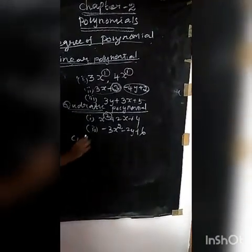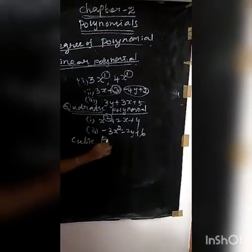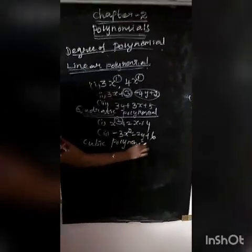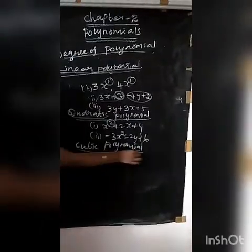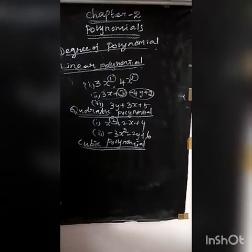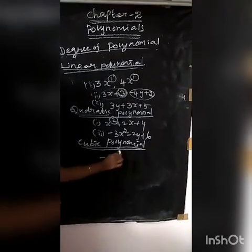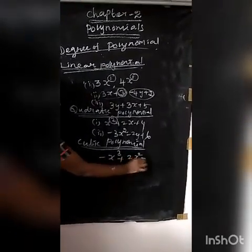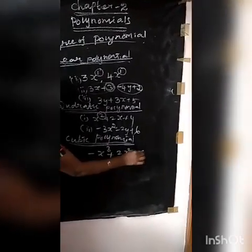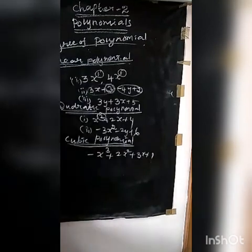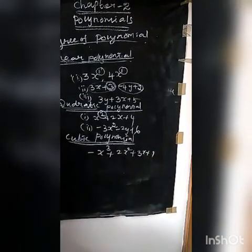Third one: cubic polynomial. Cubic means the power is 3. For example, minus X cubed plus 2X squared plus 3X plus 1 is also called a cubic polynomial.